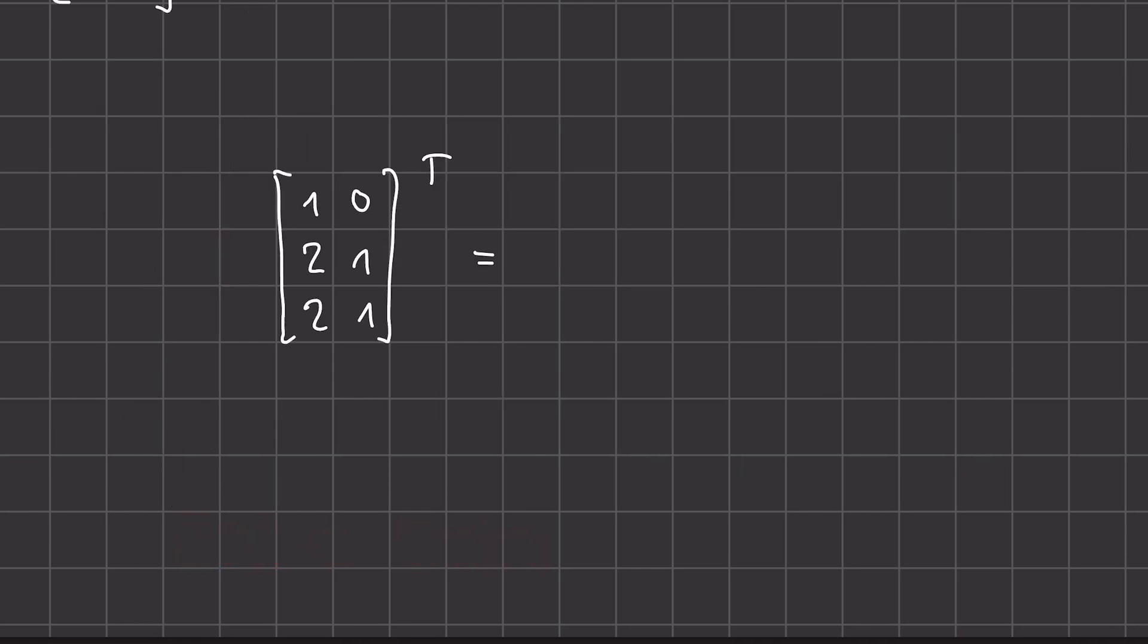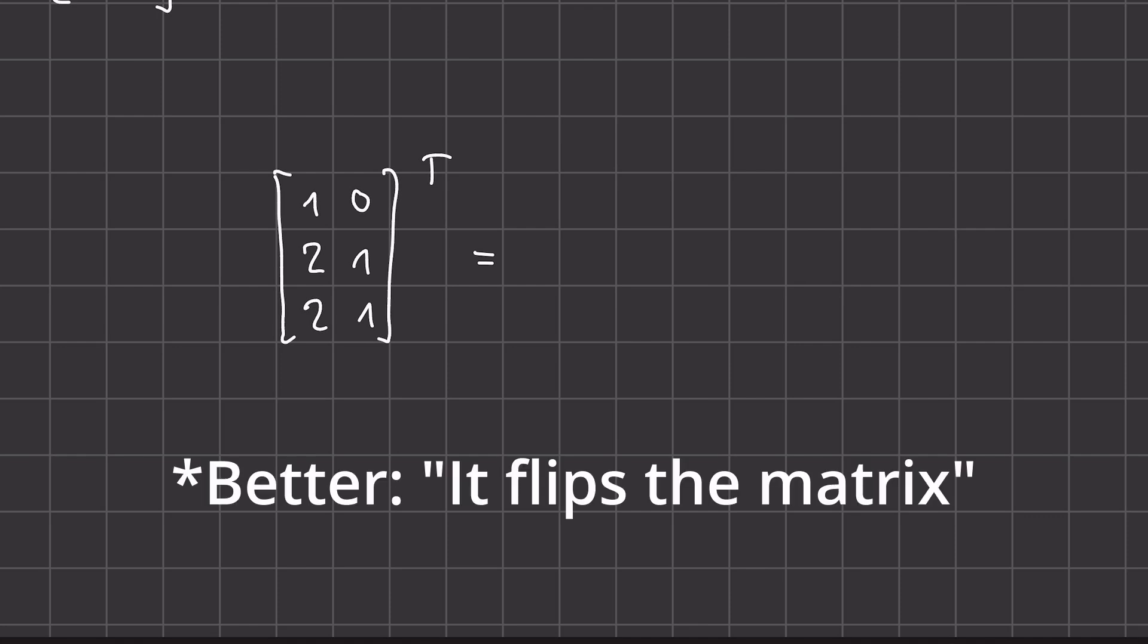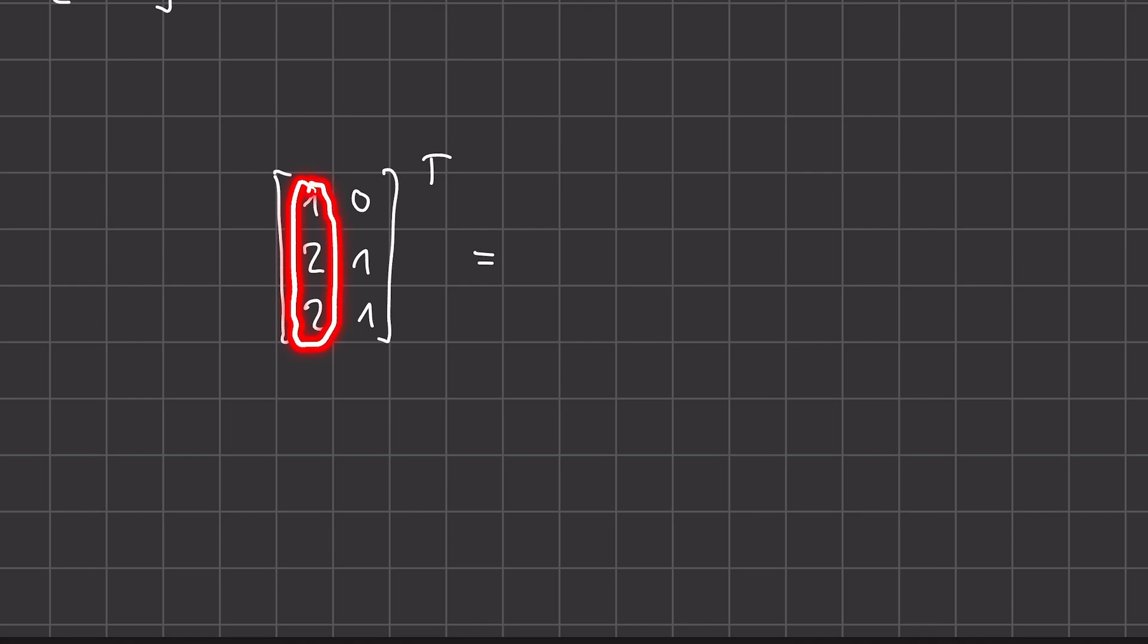An operator which is not familiar from vectors is the transposition, where essentially you rotate the matrix, where the first column becomes the first row, and the first row becomes the first column. So the exact way this works is we write this first column of numbers as our first row. And then we write the second column as the second row. And then this is already our result.